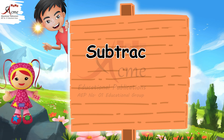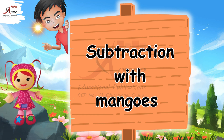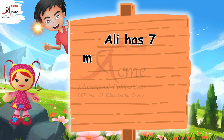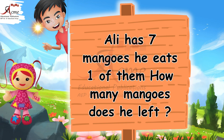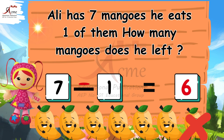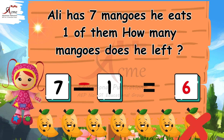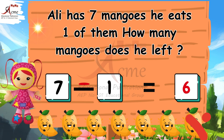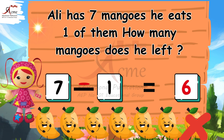First question: Subtraction with mangoes. Let's look at the first question. Ali has 7 mangoes. He eats one of them. How many mangoes does he have left? Can you count the mangoes and subtract 1 from 7? Count the mangoes — 7 mangoes minus 1 mango equals 6 mangoes. That's right. Ali has 6 mangoes left. Great job.